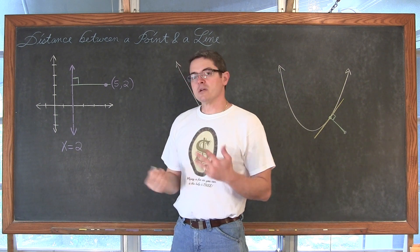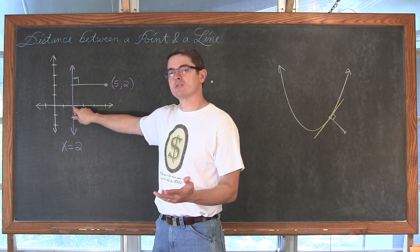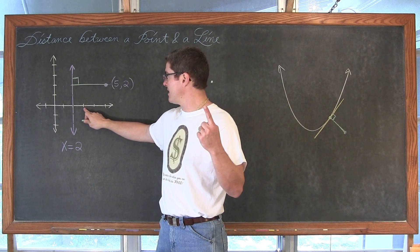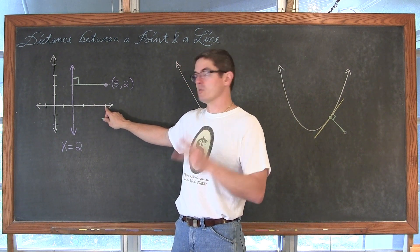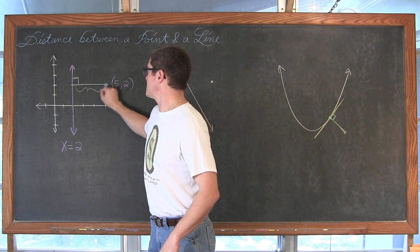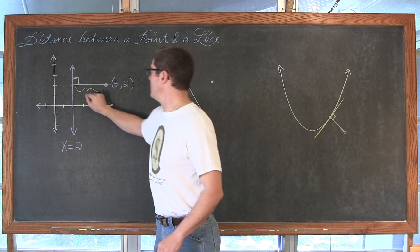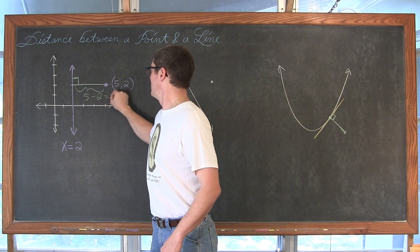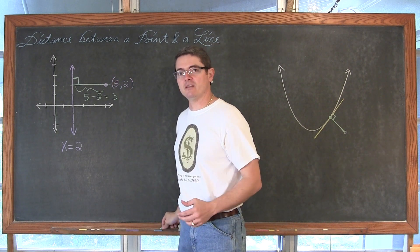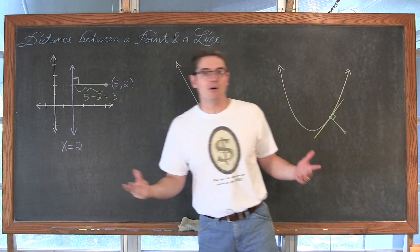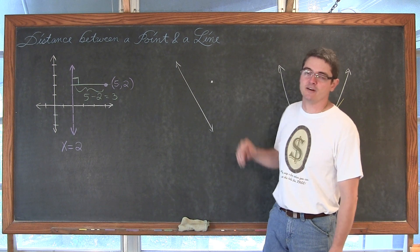I am at the x-coordinate of 2, then I moved to 3, then 4, and finally I am at the x-coordinate of 5. So the distance between the point and the line is 5 — the x-coordinate of this point — minus 2, which is equal to 3. That's a piece of cake finding the distance between a point and a line. Just look at the picture.